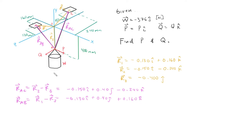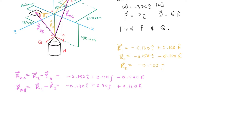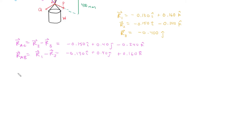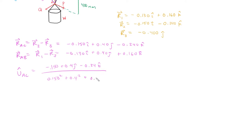Now we can define the unit vectors going from A to B and A to C using our definition of a unit vector. UAC is negative 0.150i plus 0.4j minus 0.24k divided by its magnitude — the square root of 0.150 squared plus 0.4 squared plus 0.24 squared. After plugging in these numbers, we get the unit vector, and we repeat the process for UAB.